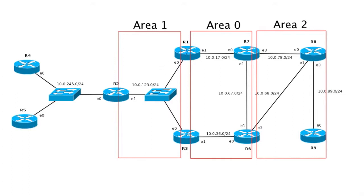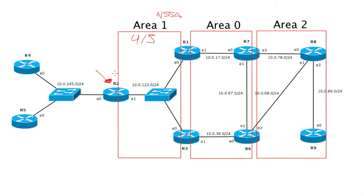This is our topology. We have three areas and we're going to be focusing mostly on area 1 and area 0. Area 1 is an NSSA area, which means we are filtering LSA types 4 and 5. Router 2 is injecting some external routing information — you might run into this case in a production environment because you have a partner network or something similar that needs to be on that device and can't connect to your backbone. So we're injecting some external prefixes there and that's injected as a type 7.